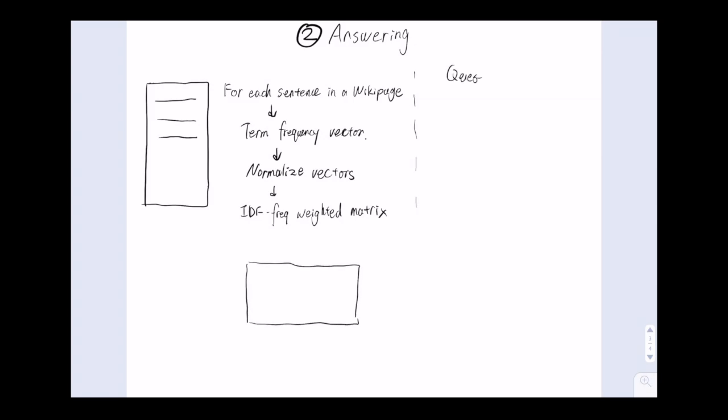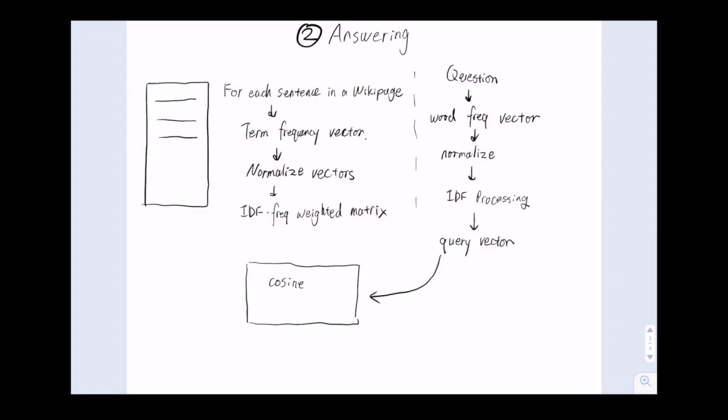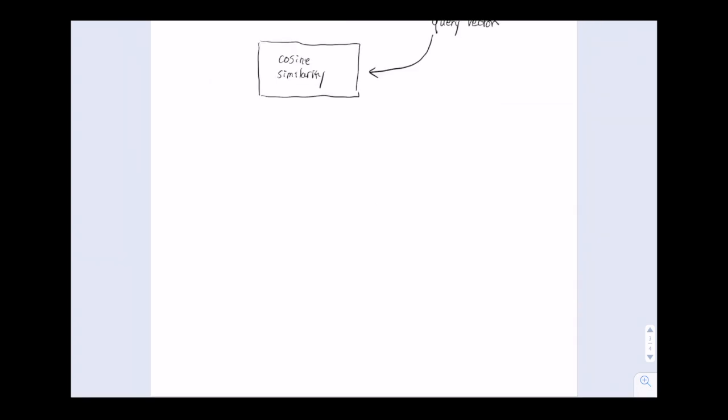And for each input question, we'll also convert it into a word frequency vector, normalize it, apply the IDF processing, and convert it into a query vector, and then use cosine similarity to find the sentence that contains the answer to the question.